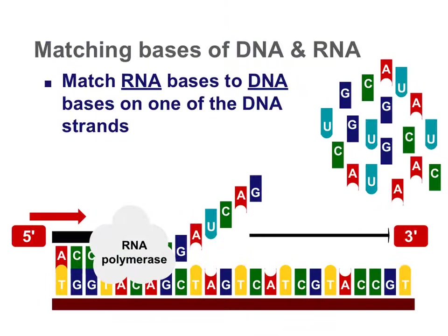Always think of complementary base pairing rules. The RNA molecule has a substituted base — uracil — and this must become natural to you. It's one characteristic that makes RNA unique from DNA. RNA polymerase's job is to ensure the correct order of RNA nucleotides is complementary to the DNA sequence.